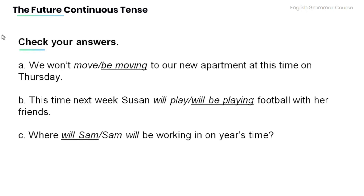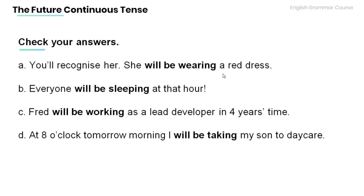Now let's check your answers. A. We won't be moving to our new apartment at this time on Thursday. B. This time next week Susan will be playing football with her friends. C. Where will Sam be working in one year's time? D. She'll be wearing a red dress. E. Everyone will be sleeping at that hour. F. Fred will be working as a lead developer in four years time. G. At eight o'clock tomorrow morning, I will be taking my son to daycare.